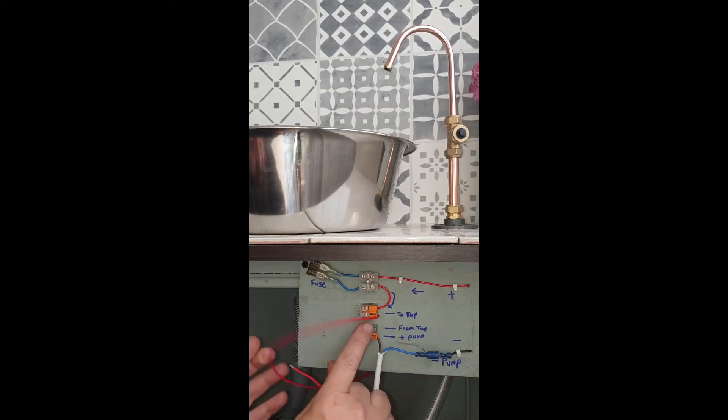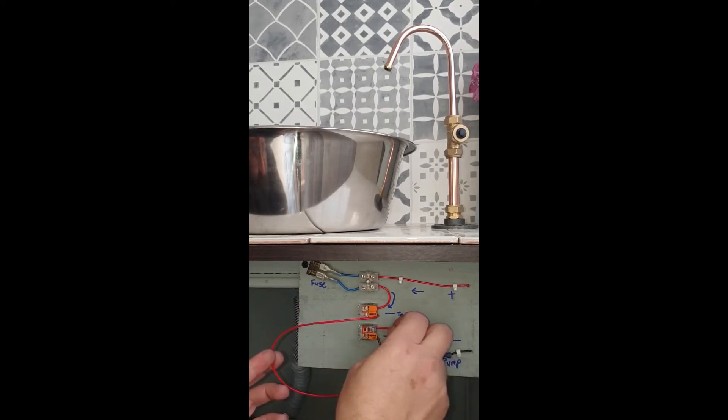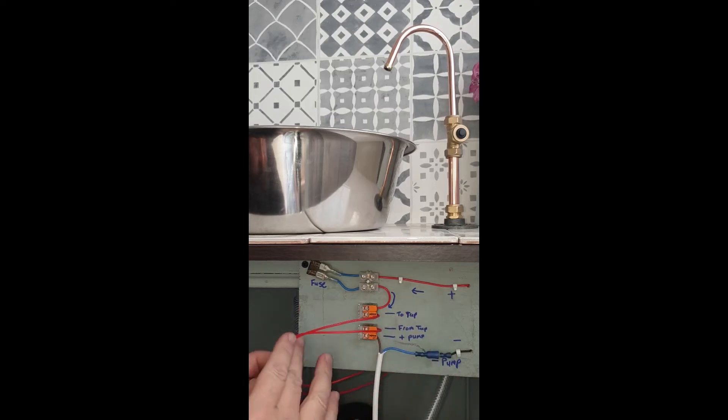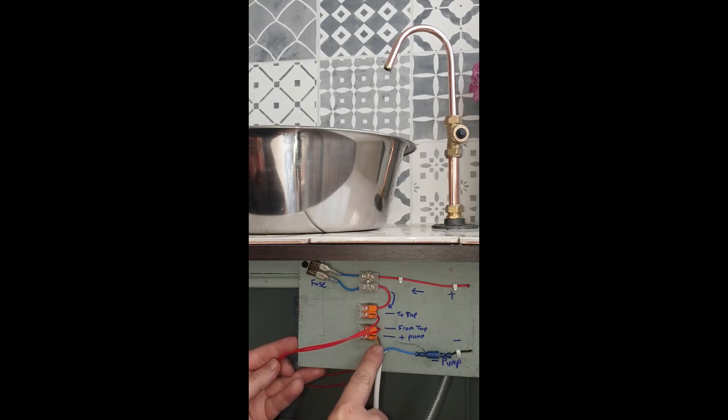So you're making a circuit: positive through the fuse up to the tap, back from the tap into the positive of the pump.